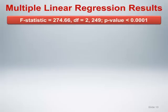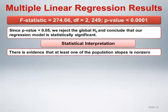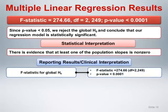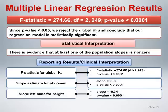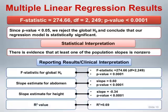The global null hypothesis, simultaneously testing that both slope coefficients are zero, is tested by an F statistic. Here the F statistic is 274.66, with degrees of freedom equal to 2 and 249, and a p-value less than 0.0001, indicating a statistically significant result. We conclude that there is evidence that at least one of the population slope parameters is non-zero. Next, we proceed with individual hypothesis tests for each slope and summarize our results. We report the F statistic for the global null hypothesis, the slope estimate for abdomen circumference — here equal to 0.6, with a p-value less than 0.0001 — the slope estimate for height — here equal to minus 0.34, with a p-value less than 0.0001 — and the r-squared value of 0.69.